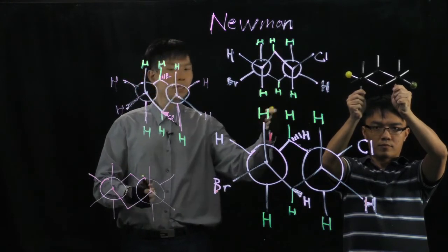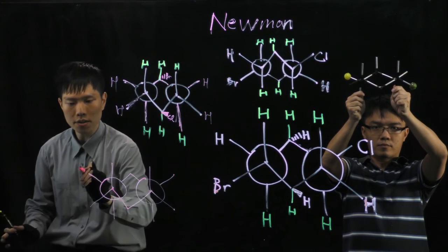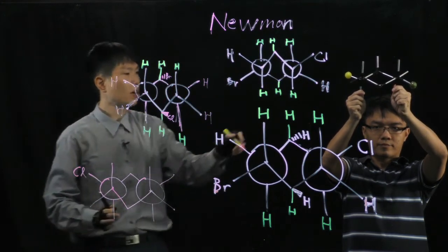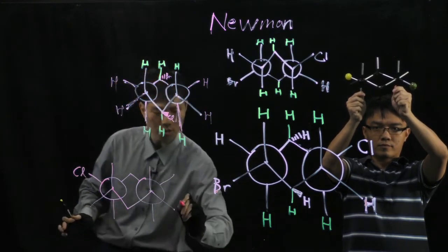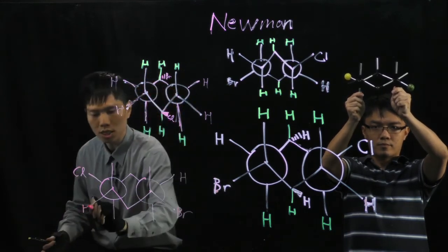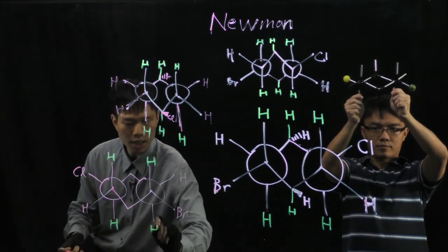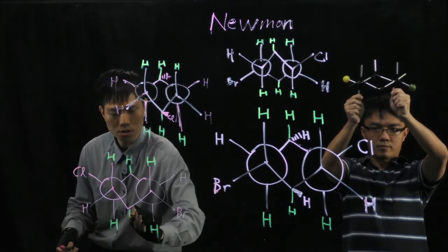And then here. Chlorine at the back carbon points up, so it's right here. I'll have Cl. And bromine, front carbon pointing down. So just fill the rest with the hydrogens. H, H, axial in yellow, axial in yellow.